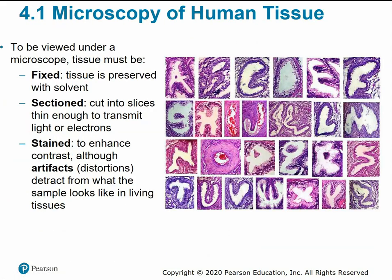When you look at tissues under the microscope or online, you'll see them in vibrant colors. In reality, our tissues are pretty translucent and don't have much color. To view tissues under the microscope, we have to fix and preserve the living tissue so it doesn't decay. It has to be sectioned into slices thin enough for light to pass through, and we have to stain it to create contrast so we can see the different layers and regions.